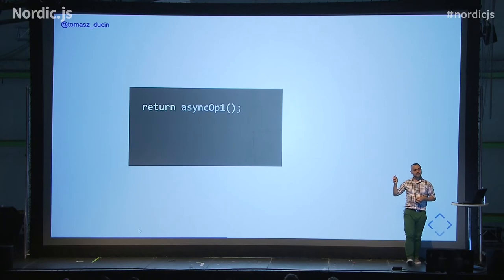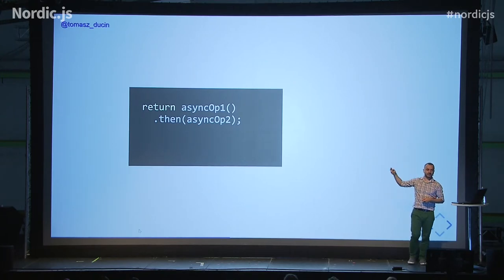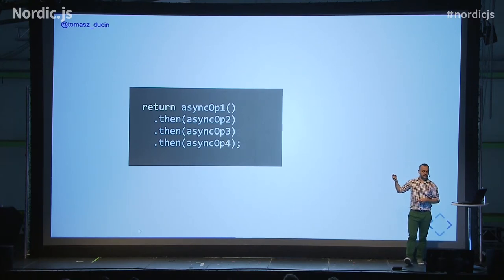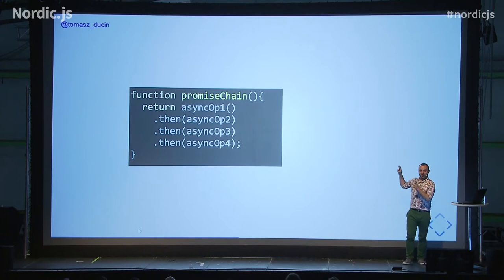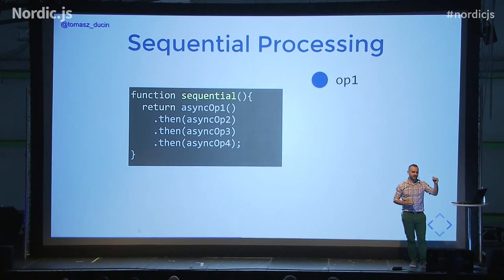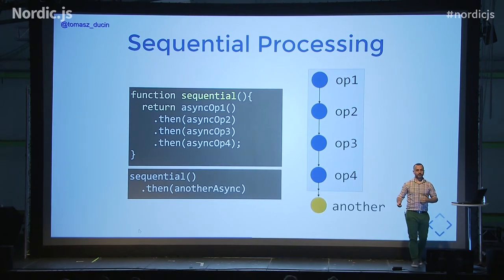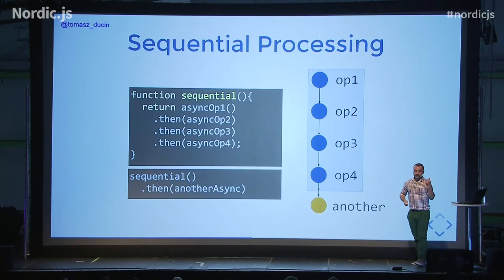Let's look at this example. We have asyncOp1 which returns a promise. We chain another operation so the result of asyncOp1 becomes input of asyncOp2, whose output becomes input of op3, and so on. We wrap the thing in a function so it can be reused. The only way to get the value is to make another step. What we have here is actually sequential processing — one operation must finish before another can start.